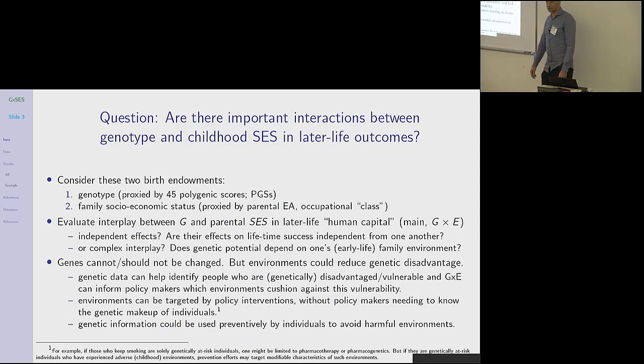If there is G by E, or if it's absent, then we can think about whether the effects on lifetime success of genes and environments are independent from one another, or is there more complex interplay? So genes can't and maybe should not be changed, but environments could reduce genetic disadvantage.